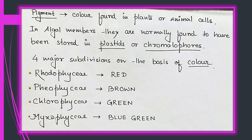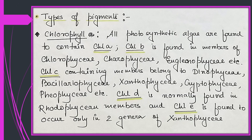On the basis of color, there are four major subdivisions of algae. These are broad classes based on discrete colors: first, Rhodophyceae, which we normally call red algae; Phaeophyceae, commonly known as brown algae; Chlorophyceae, known as green algae; and Myxophyceae, which are the blue-green algal members.